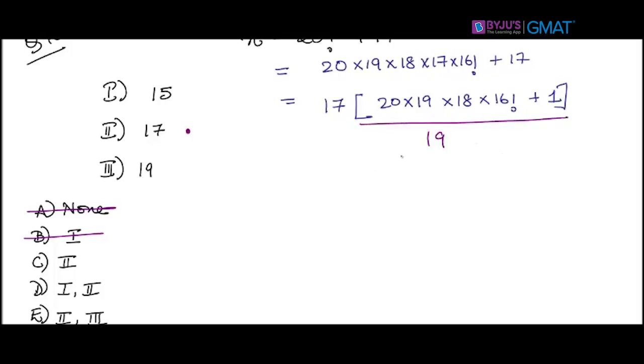I can split this: (20 × 19 × 18 × 16!)/19 + 1/19. 19 and 19 cancel out here, but you are still left with a fraction, so clearly the expression is not divisible by 19.